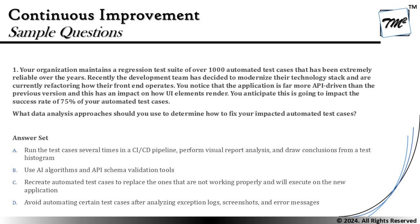To get started with the sample questions, the very first question we have for you is right here on your screen: your organization maintained a regression test suite of over 1,000 automated test cases that has been extremely reliable over the years. Recently, the development team has decided to modernize their technology stack and are currently refactoring how their front-end operates. You notice that the application is far more API-driven than the previous version, and this has an impact on how UI elements are rendered. You anticipate this is going to impact the success rate of 75% of your automated test cases. What data analysis approaches should you use to determine how to fix your impacted automated test cases?